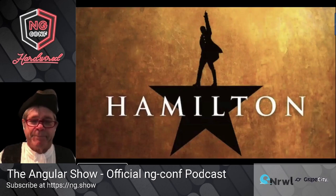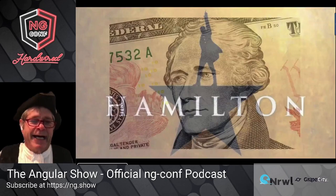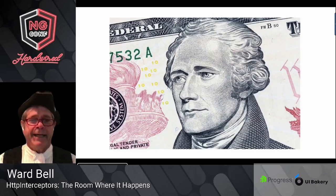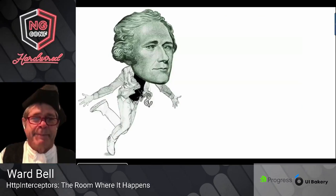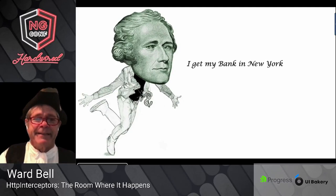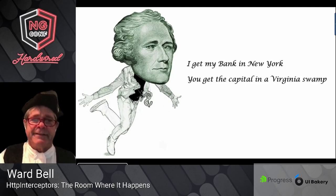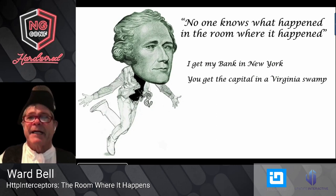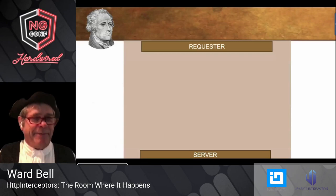I'm talking about HTTP interceptors, and the theme — still with musicals — is the great one, Hamilton. There's going to be a little pop quiz at the end of my talk. Don't look in your wallets, don't go on the net. What bill is Alexander Hamilton on? Just keep that in the back of your mind. Back in 1790, Alexander Hamilton got his bank, at the cost of moving the capital to some swamp near Virginia, and no one knows how that happened — it happened in the room where it happened.